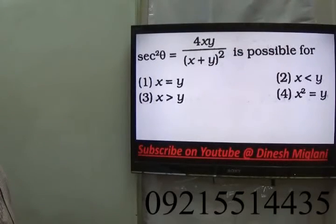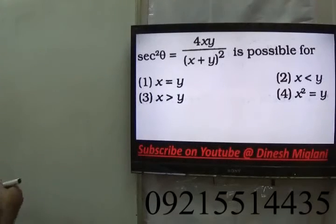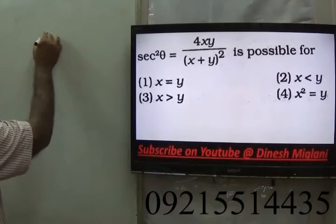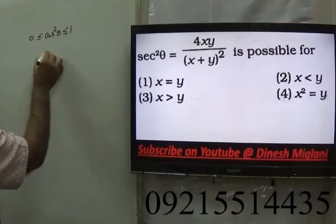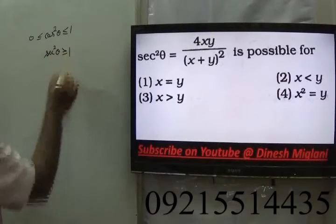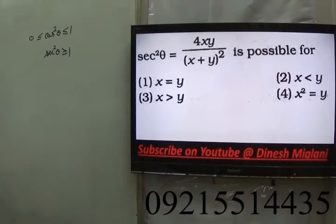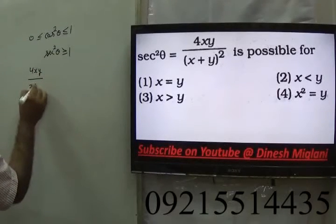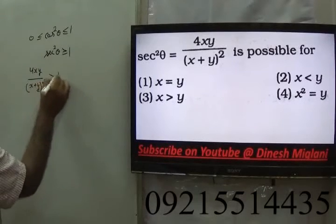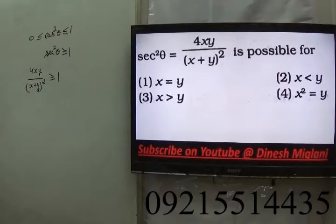It is given that sec²θ = 4xy/(x+y)² — for what values is this possible? We know that cos²θ always lies between 0 and 1, and when we consider sec²θ, it is always greater than or equal to 1. So it means 4xy/(x+y)² is always greater than or equal to 1. So 4xy/(x+y)² ≥ 1, and we can cross multiply to get 4xy ≥ (x+y)².